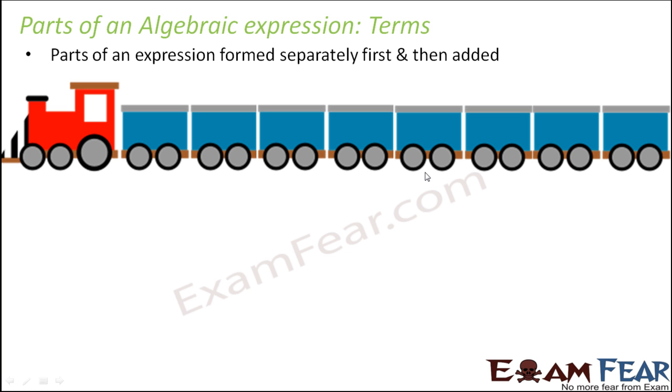Like different compartments together join to form that entire train, in a similar way these parts of the algebraic expression are formed separately first and then all these separate parts, just like the separate compartments, are added together to form the algebraic expression. That gives you some rough idea about what I mean by parts of an algebraic expression. Let's take an example and understand the same.